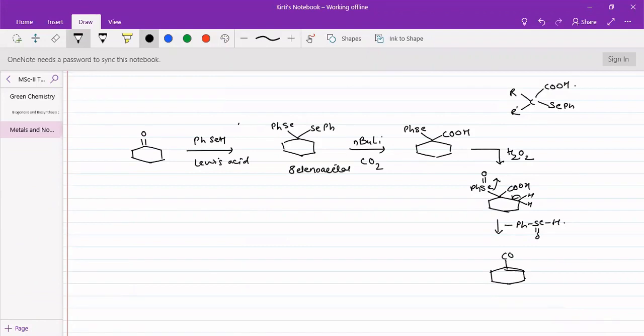And we get alpha-beta unsaturated acid. Alpha-beta unsaturated acid can be easily obtained from this particular reaction, from cyclohexanone we can create this reaction.